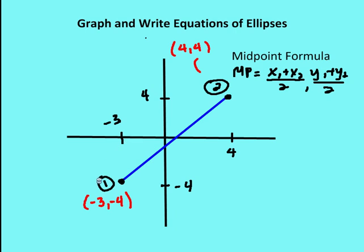We'll say x1, y1 from coordinate one, and x2, y2 from coordinate two, and then taking the average of the x values for the coordinate — x1 plus x2 over two — and then the average of the y values for the coordinate — y1 plus y2 over two.